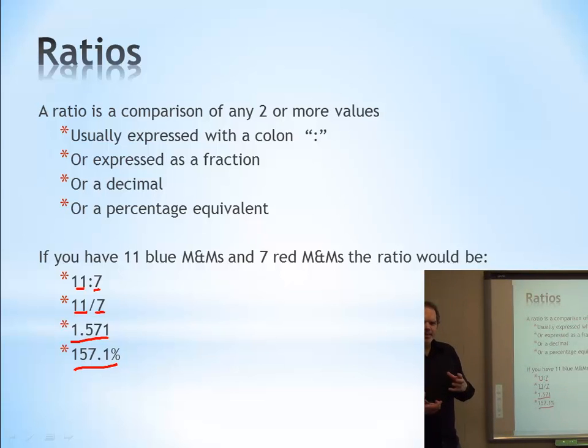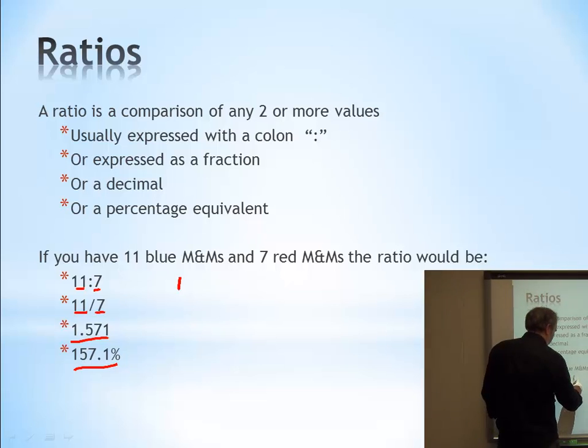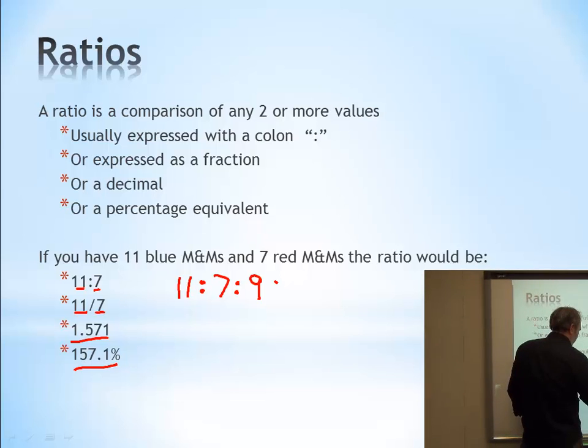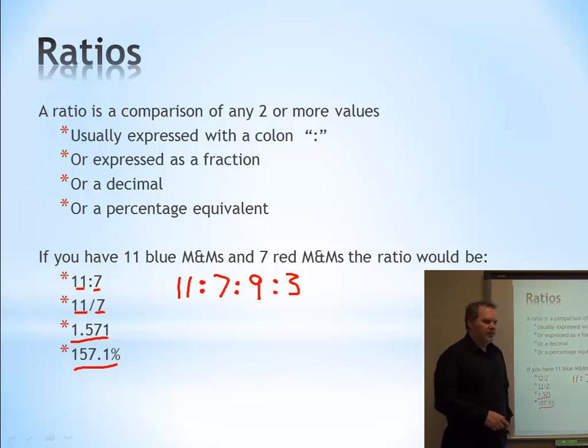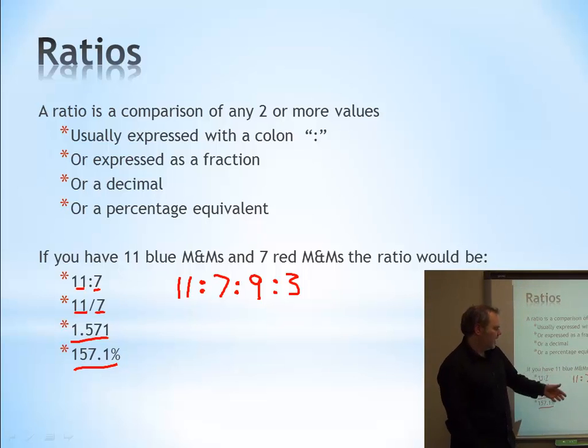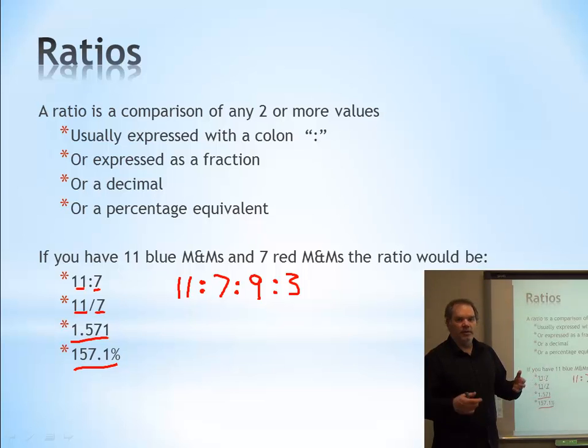But it doesn't need to be limited to two. If we also had nine yellow M&Ms, we could say the ratio is 11 to 7 to 9 adding the yellow M&Ms. And, of course, there's green M&Ms and our bag only had three of those. So, we could send the ratio as many terms as we want. So, for 11 blue M&Ms, there was 7 red, there was 9 yellow, 3 green. The ratio continues.